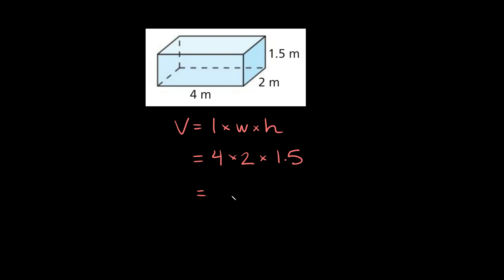If you multiply this all together you'll get that this is equal to 12. And what are our units? Well, we're working with meters and with volumes we have to put a little 3 for our exponent because we're working in three dimensions. So that's why our units are cubic. So the volume of this rectangular prism is 12 meters cubed, or another way to say that is 12 cubic meters.